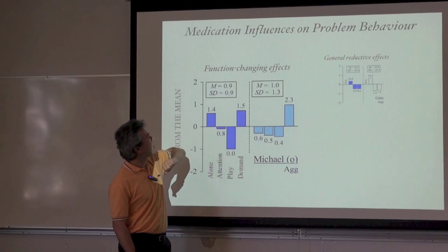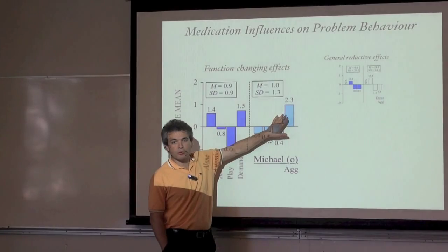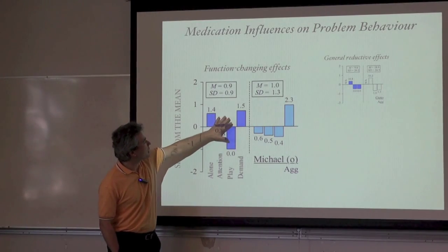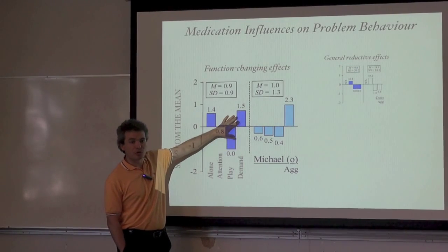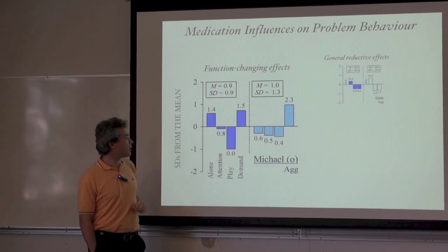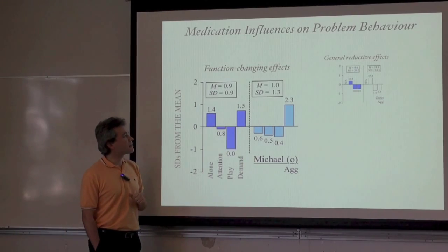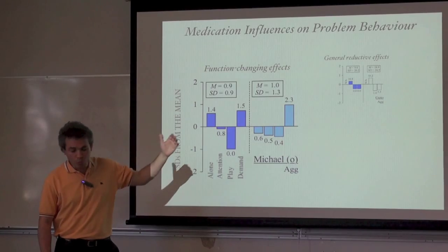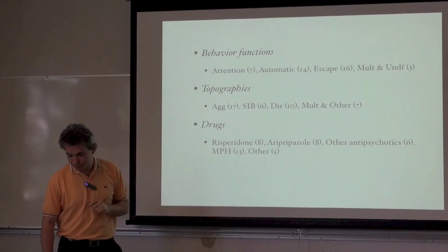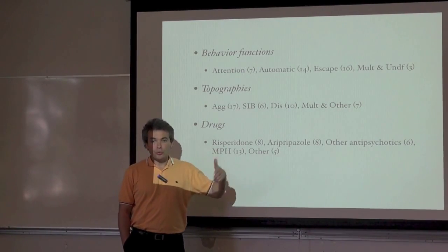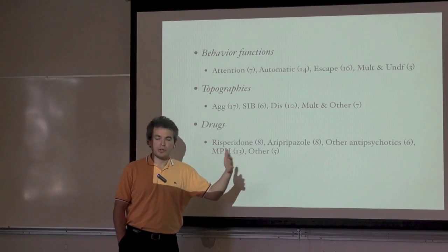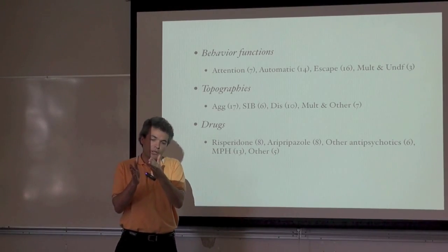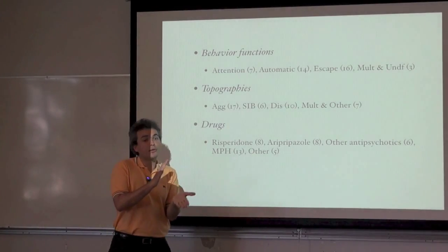We conducted a re-analysis of all published literature with side-by-side functional analyses conducted with and without medication — 37 published studies — examining functions including automatic, escape, attention, and multiple functions, across behaviors including aggression, self-injurious behavior, and disruptive behavior, and various drug types. In the first analysis, each data point summarizes the overall effect of medication when comparing functional analyses with and without it. Only a minority of cases showed a clinically significant reductive effect size, though most participants showed some reduction of behavior, albeit not always clinically significant.